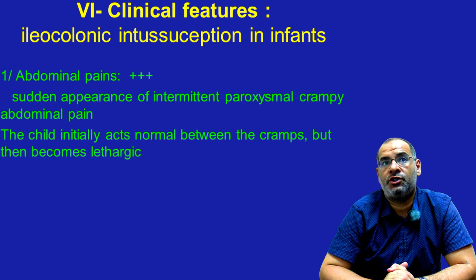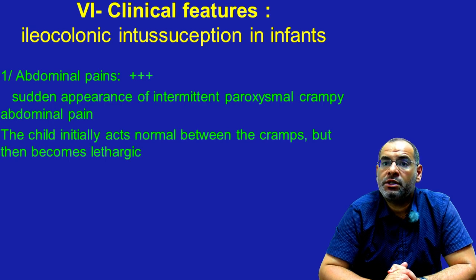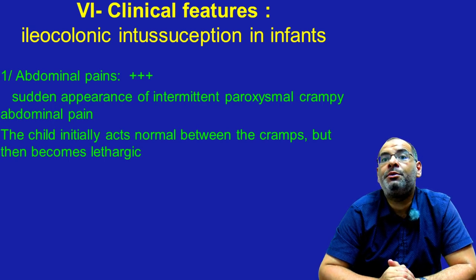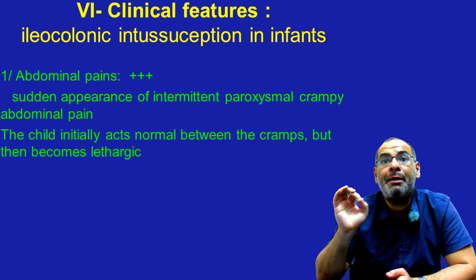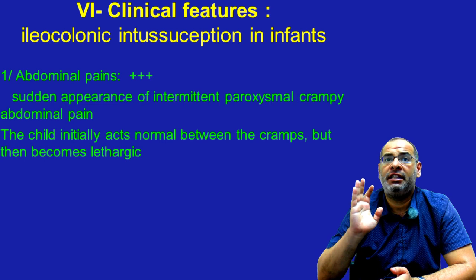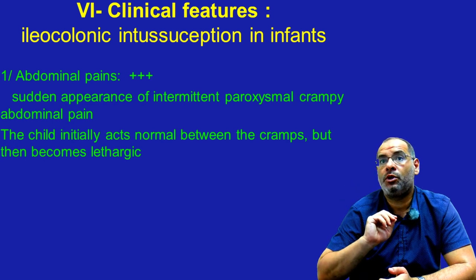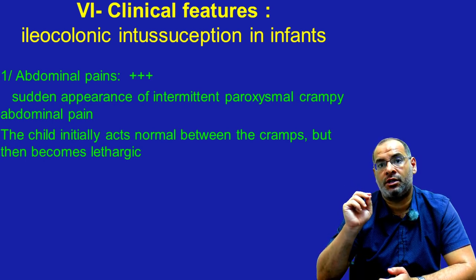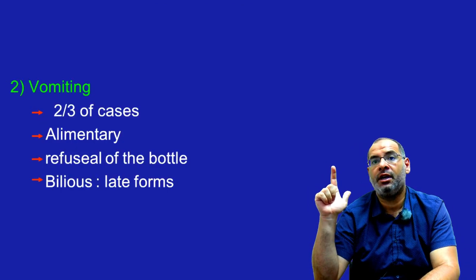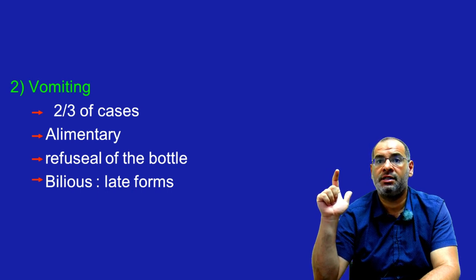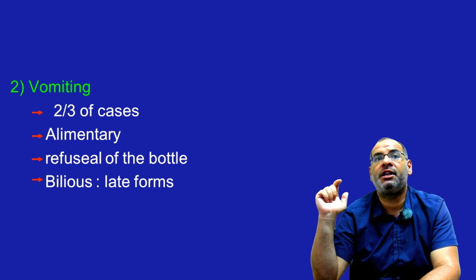For the clinical features, we describe the ileocolonic intussusception in infants. The most constant sign is abdominal pain — with sudden appearance of intermittent, paroxysmal, crampy abdominal pain. The child initially acts normal between the cramps but then becomes lethargic. The second sign is vomiting, observed in two-thirds of cases, alimentary in the beginning and becoming bilious in the late form.